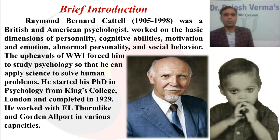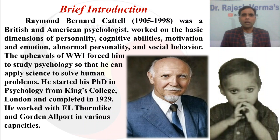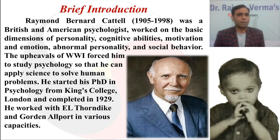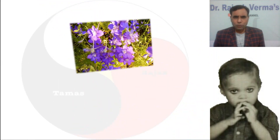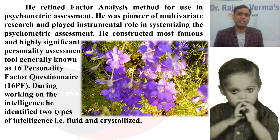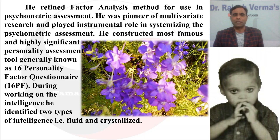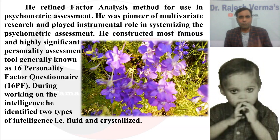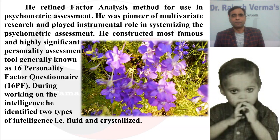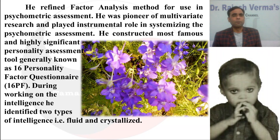He started his PhD in psychology from King's College London and completed it in 1929. He worked with E. L. Thorndike and Gordon Allport in various capacities. He took the tradition of refining the factor analysis method for use in psychometric assessment. Factor analysis was given by Charles Spearman, later developed by Thurstone, and further refined by Cattell. He constructed the most famous personality assessment tool, the 16 PF — 16 Personality Factors Questionnaire.